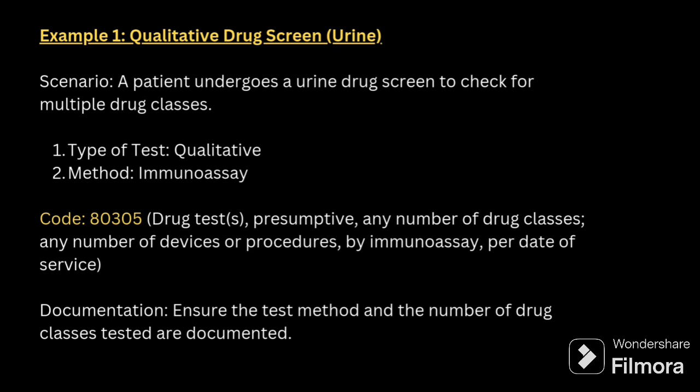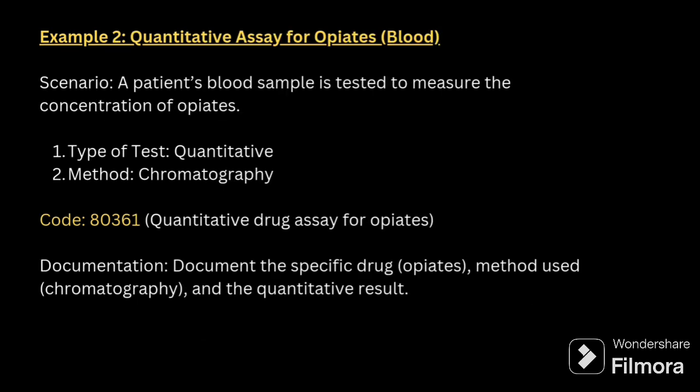Here they have given an example. The patient undergoes a urine drug screening to check multiple drug classes. The type is qualitative and the method is immuno-assay, so we assign 80305. The second example is quantitative for opioids in blood. The patient's blood sample is tested to measure the concentration of opioids. Type is quantitative, method used is chromatography, so we assign CPT code 80361.